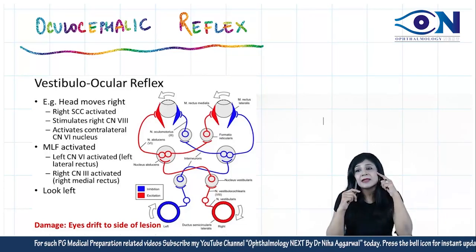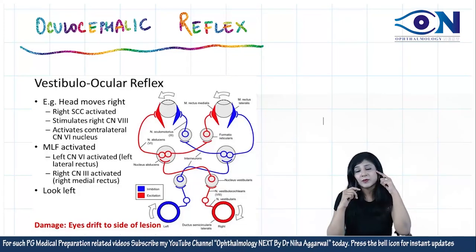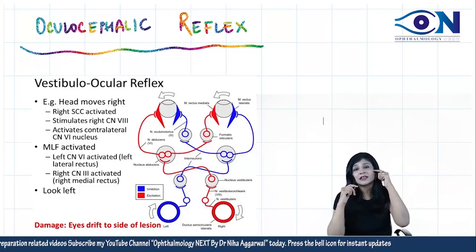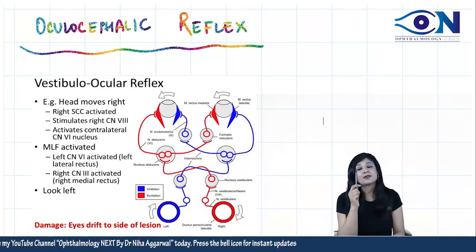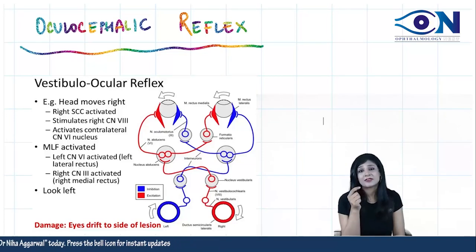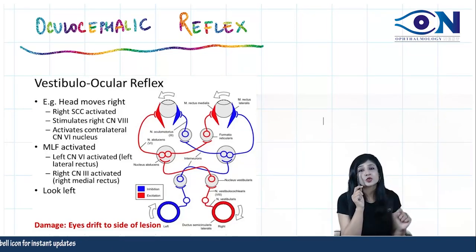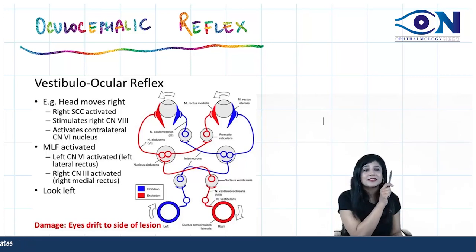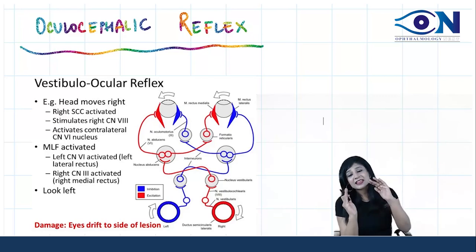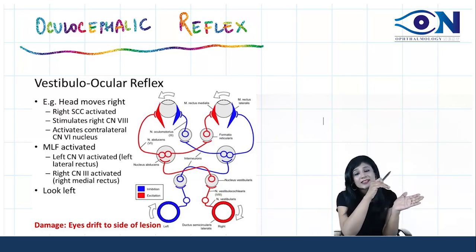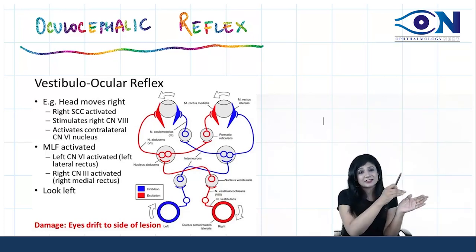If you look at the MLF pathway, the left sixth nerve nucleus is connected to the right MLF. The right MLF goes to the right third nerve, and therefore it will stimulate the eye to look towards the left. So when we tilt the head towards the right, the eyes look towards the opposite side — towards the left.